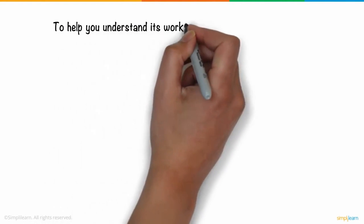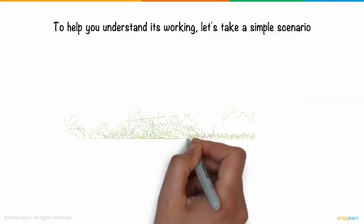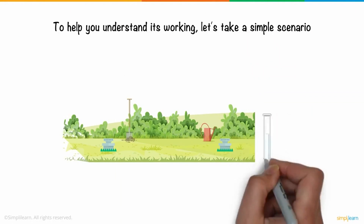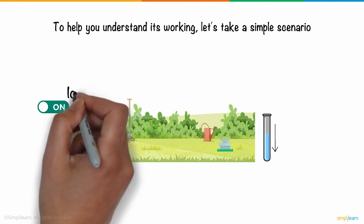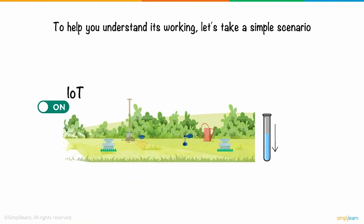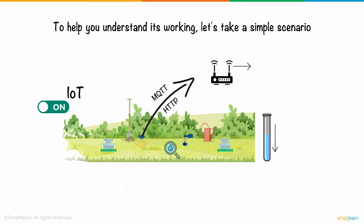To help you understand its working, let's take a simple scenario. Suppose you want to water your garden every time the moisture level in the soil drops. Instead of doing it manually, you could automate it using IoT. The sensors and actuators installed gauge the soil for its moisture. This information is sent to the IoT gateway with the help of communication protocols like MQTT or HTTP. The gateway aggregates data and feeds it to the cloud with the help of Wi-Fi or LAN. Once the moisture level drops, the system is immediately triggered and the sprinklers are turned on.